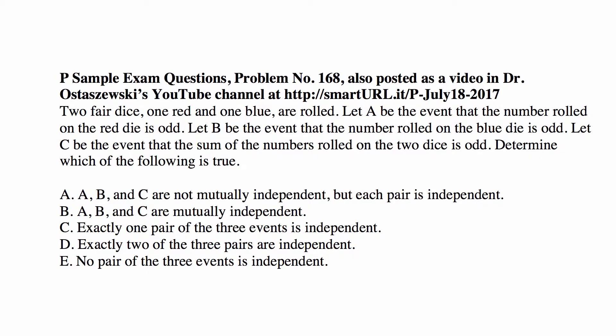Here's the problem. Two fair dice, one red and one blue, are rolled. Let A be the event that the number rolled on the red die is odd. Let B be the event that the number rolled on the blue die is odd. Let C be the event that the sum of the two numbers rolled on the two dice is odd.